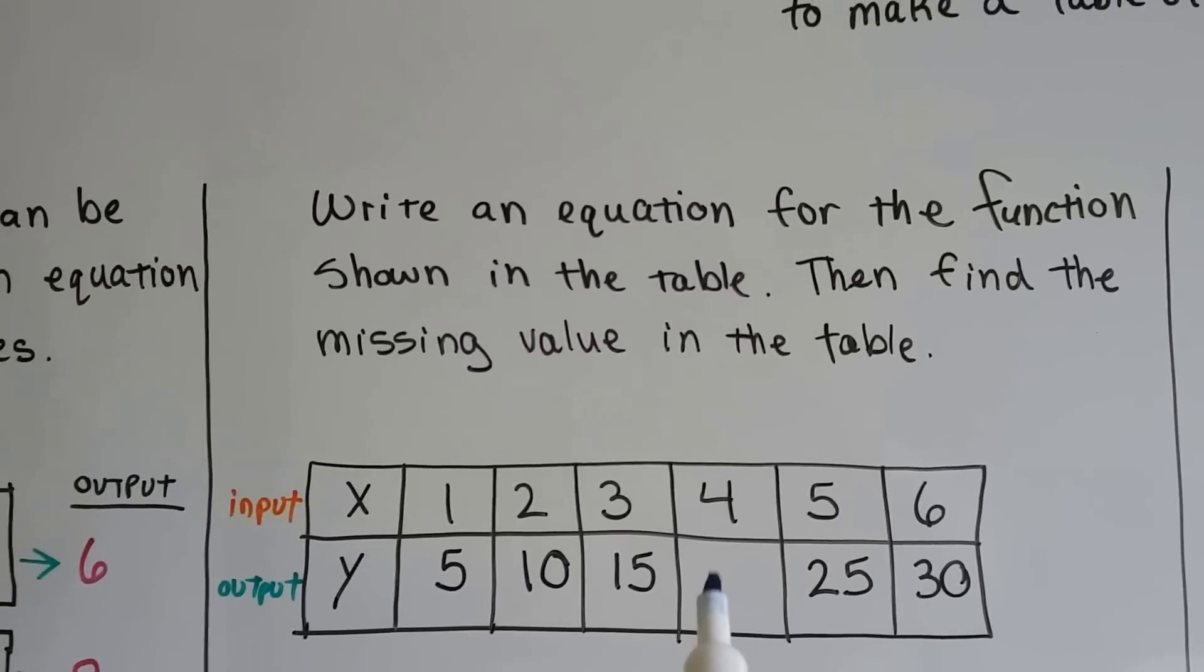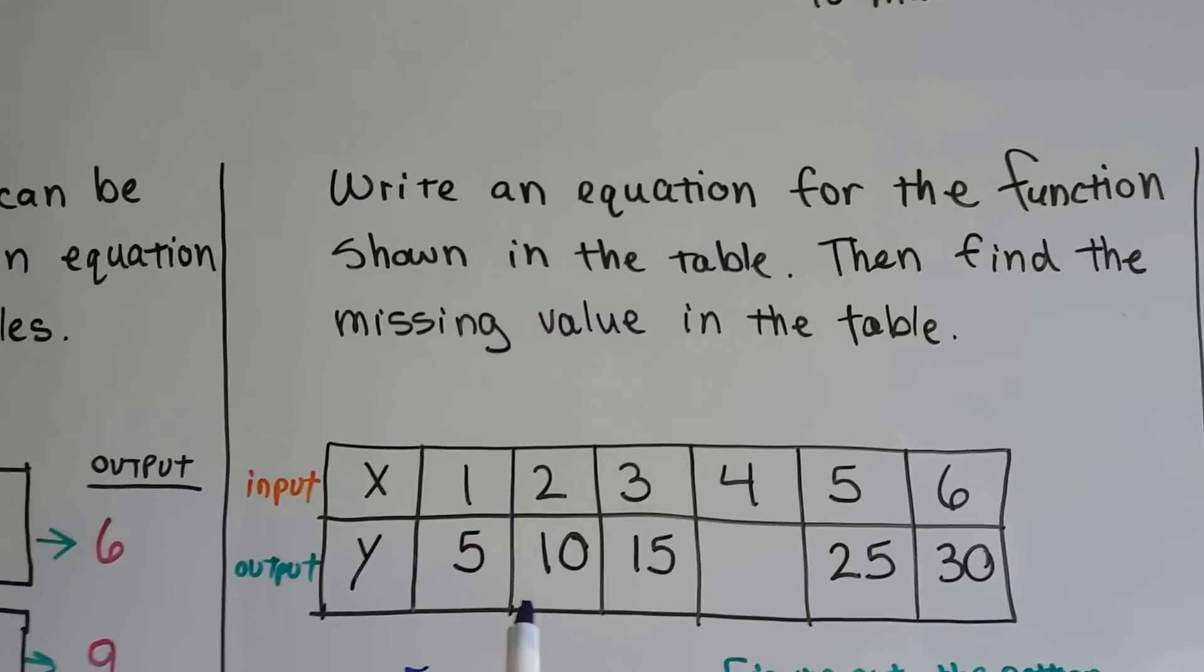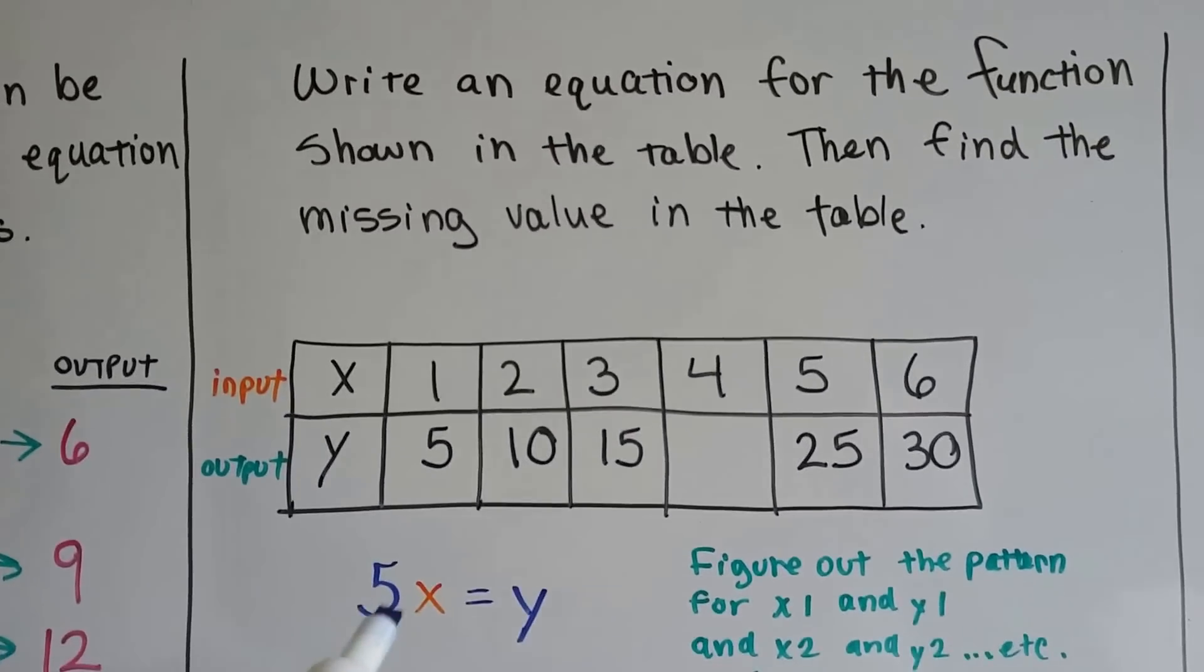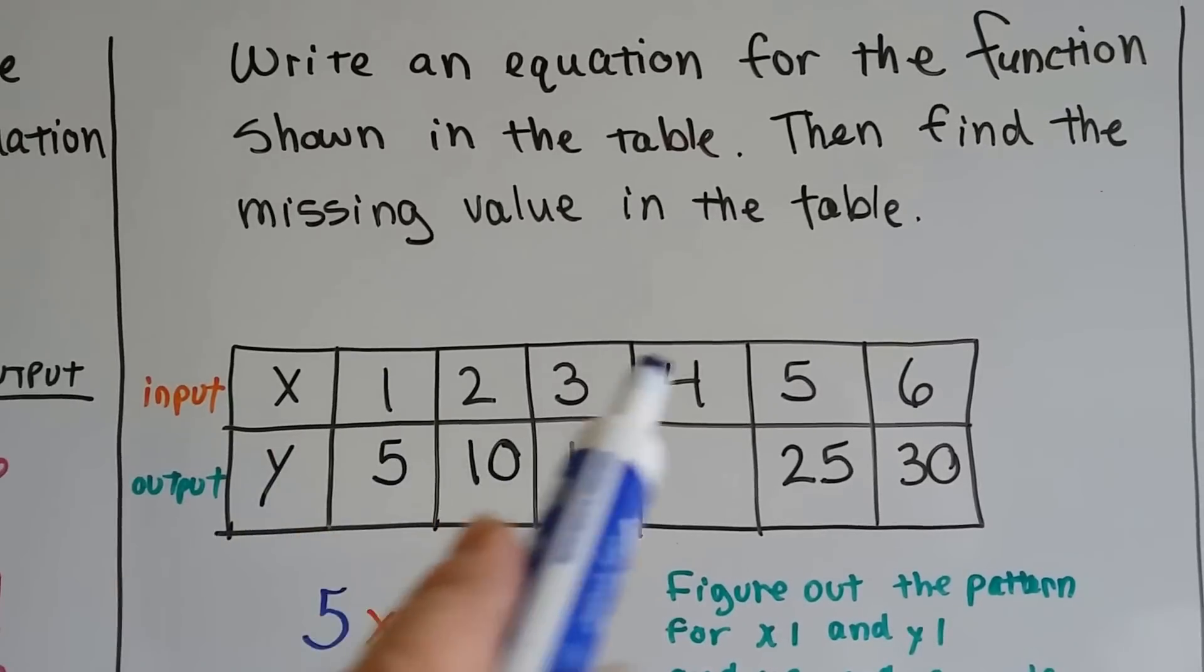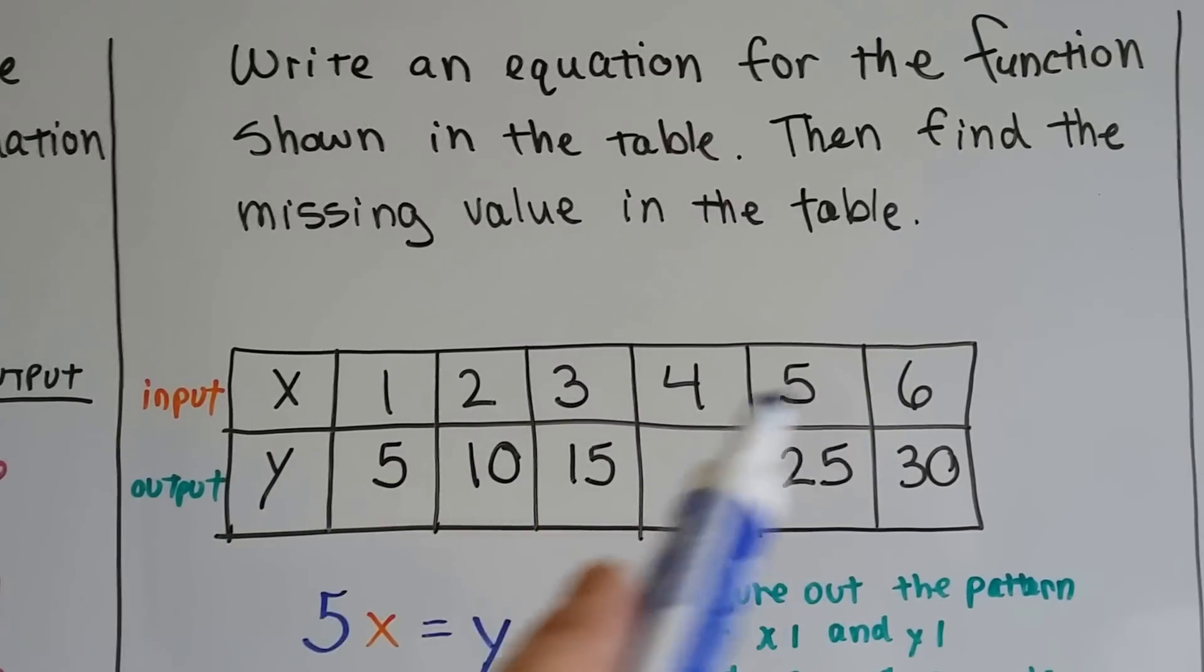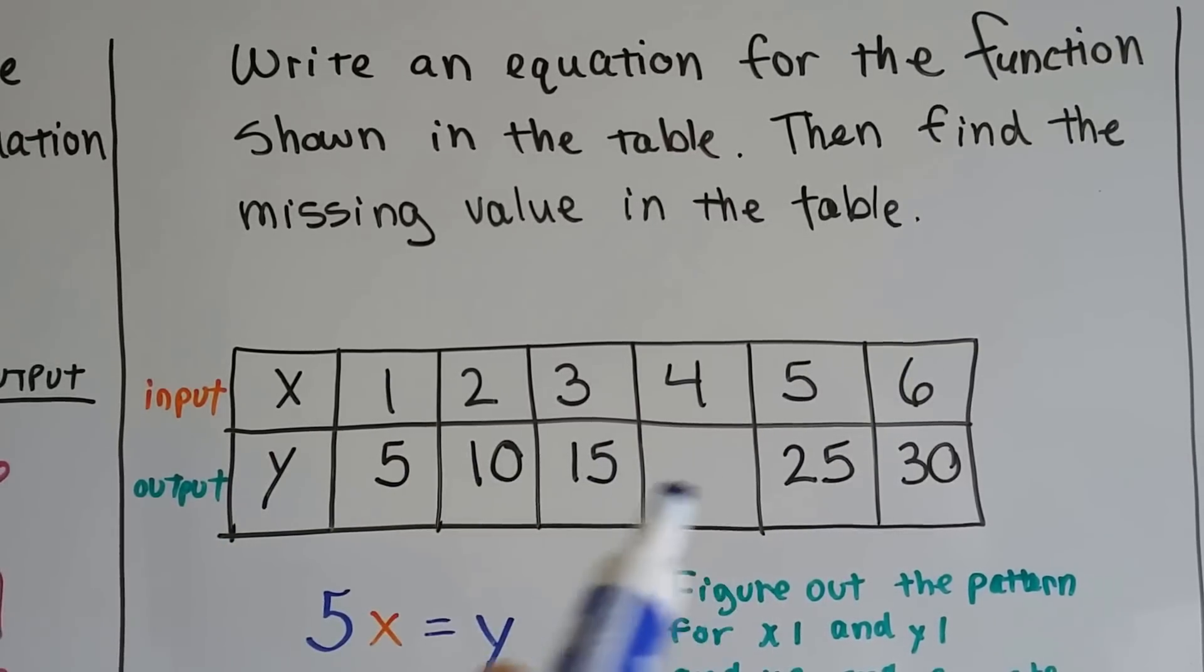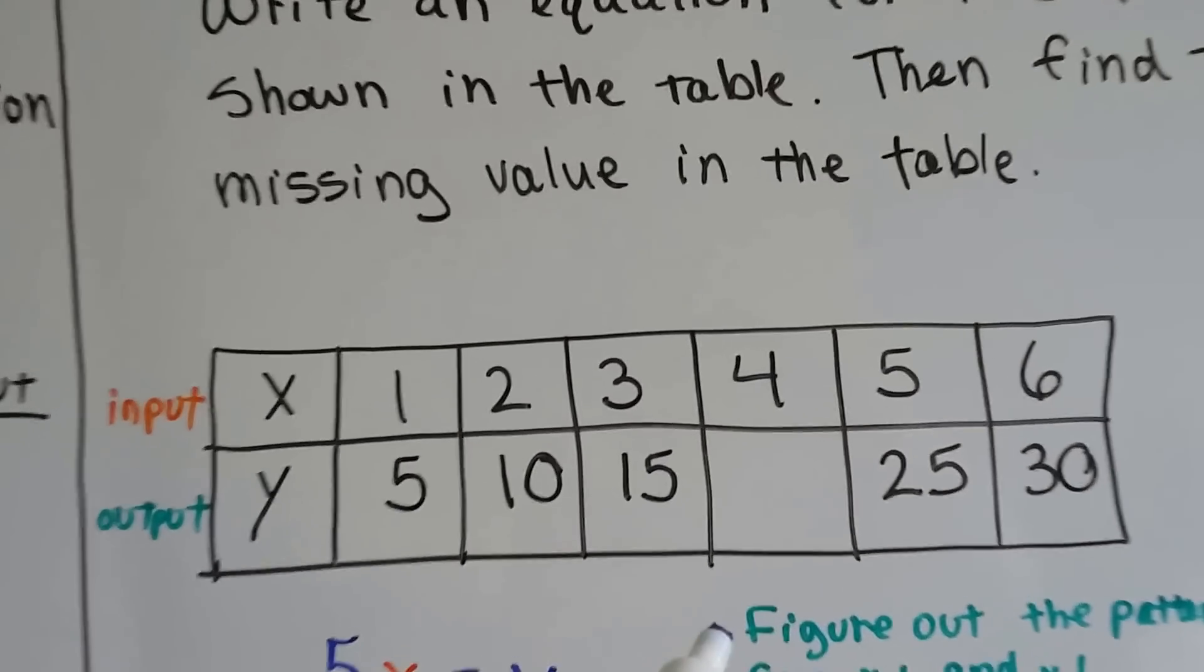I bet you can tell what's supposed to be here. Can you tell what our rule is, what our function is? The function is 5 times x equals y. 5 times whatever is in the x column, the input column, is going to equal the y column. So 5 times 4 is 20.